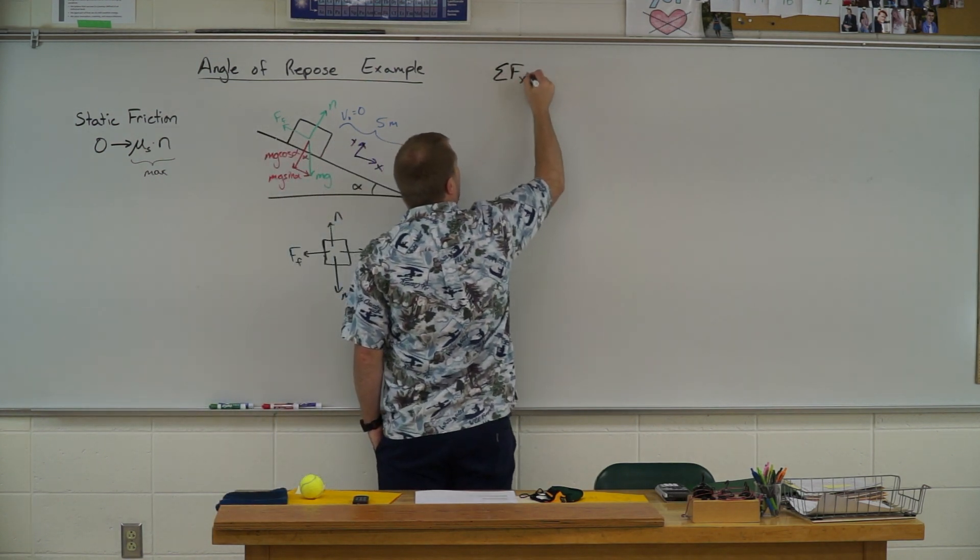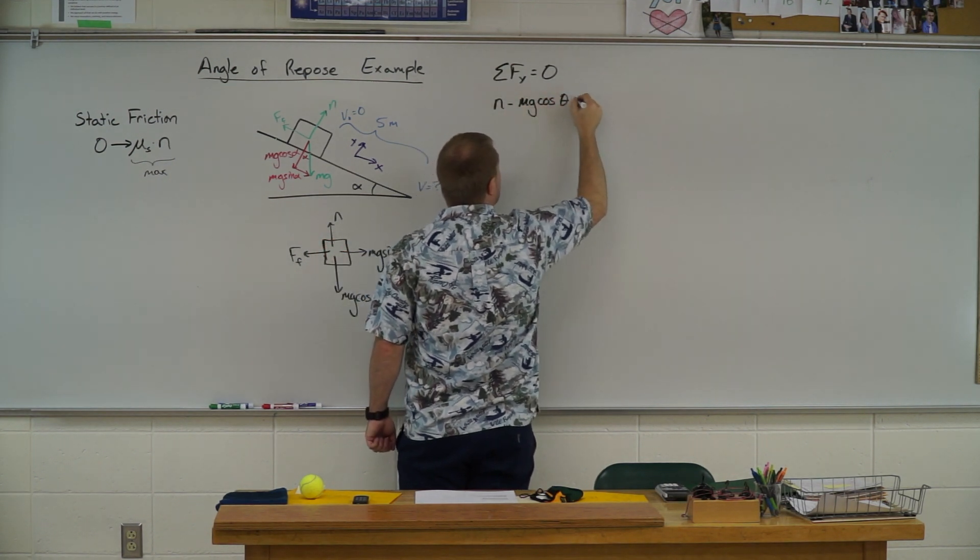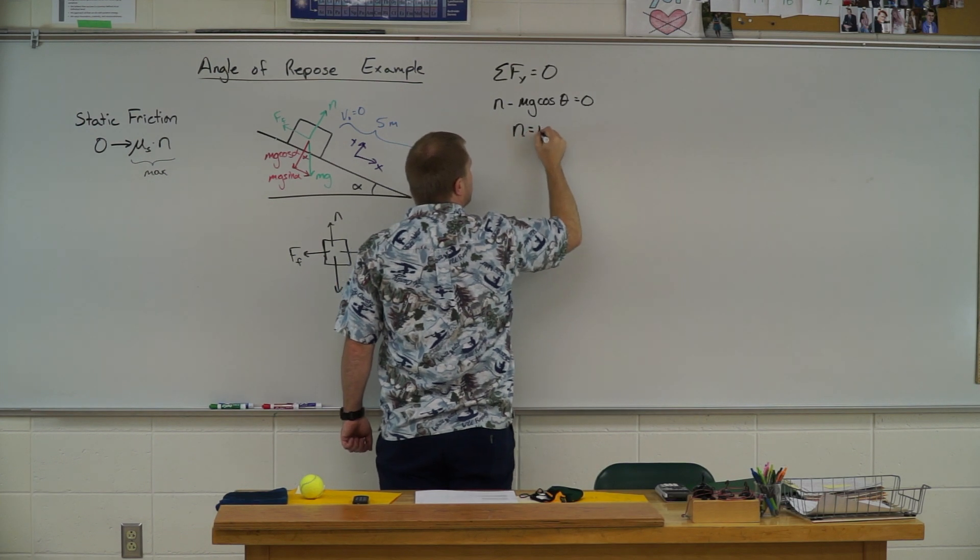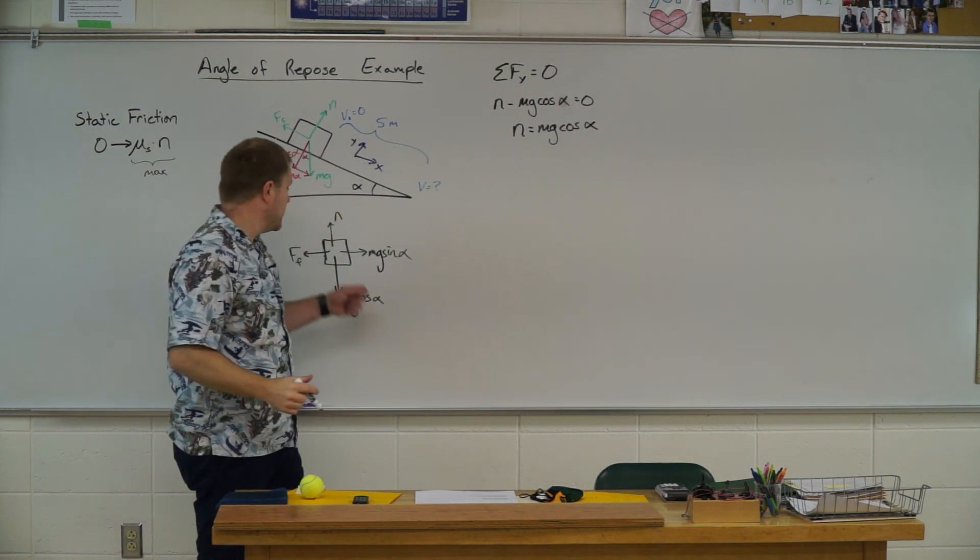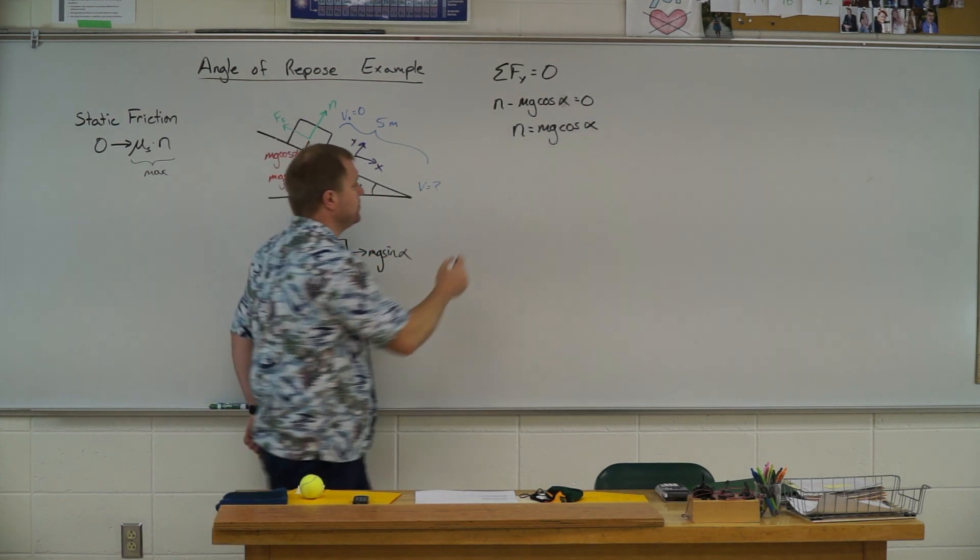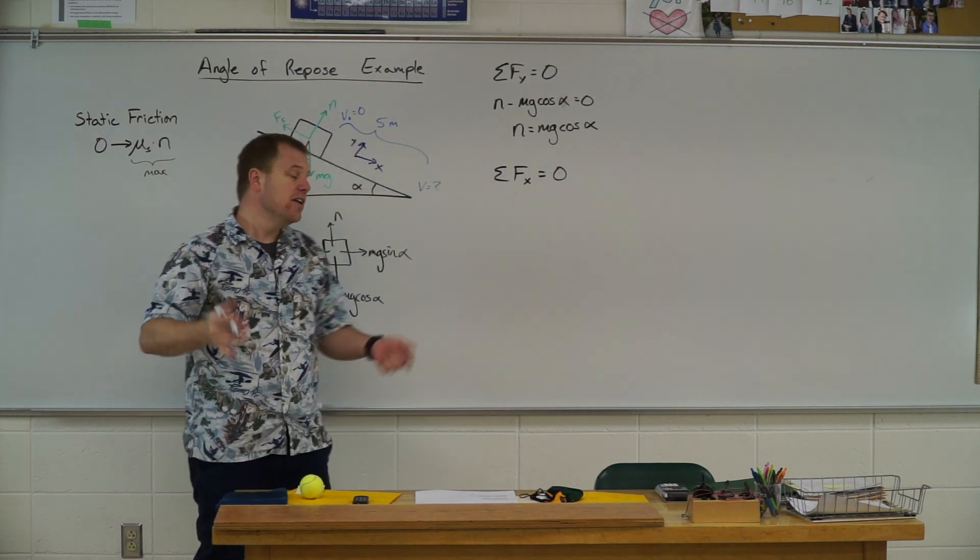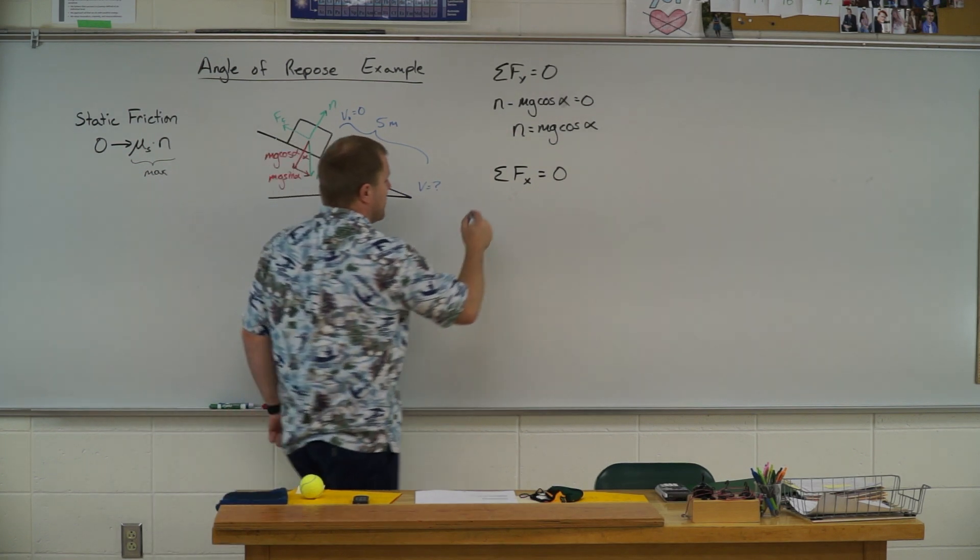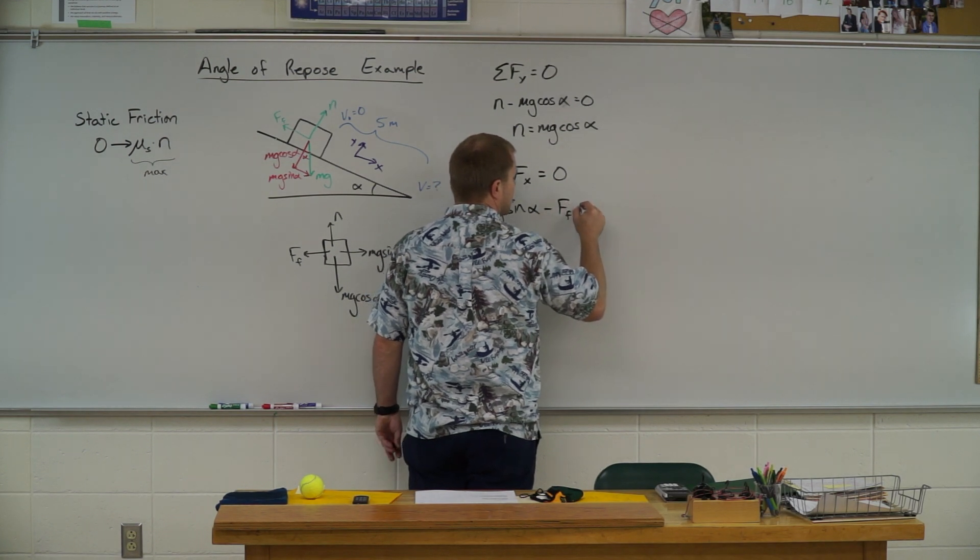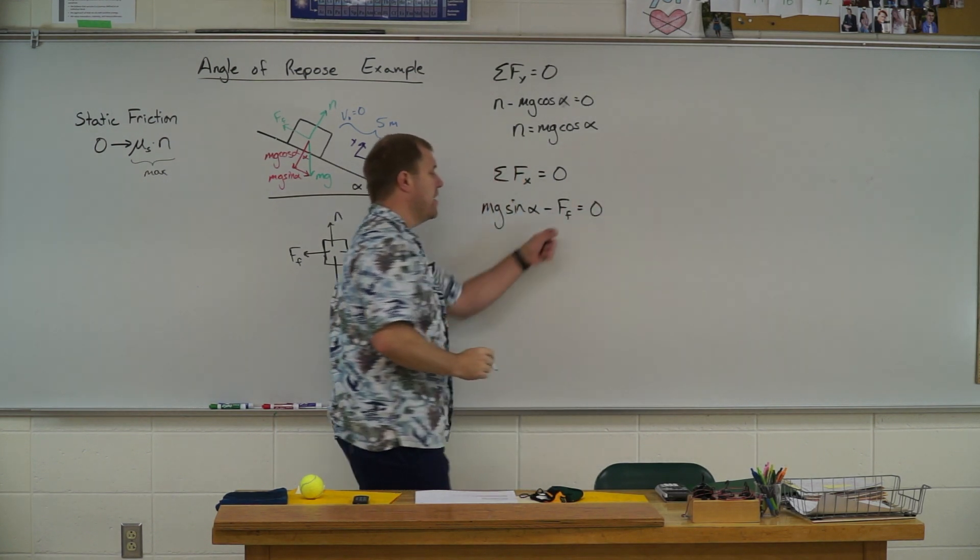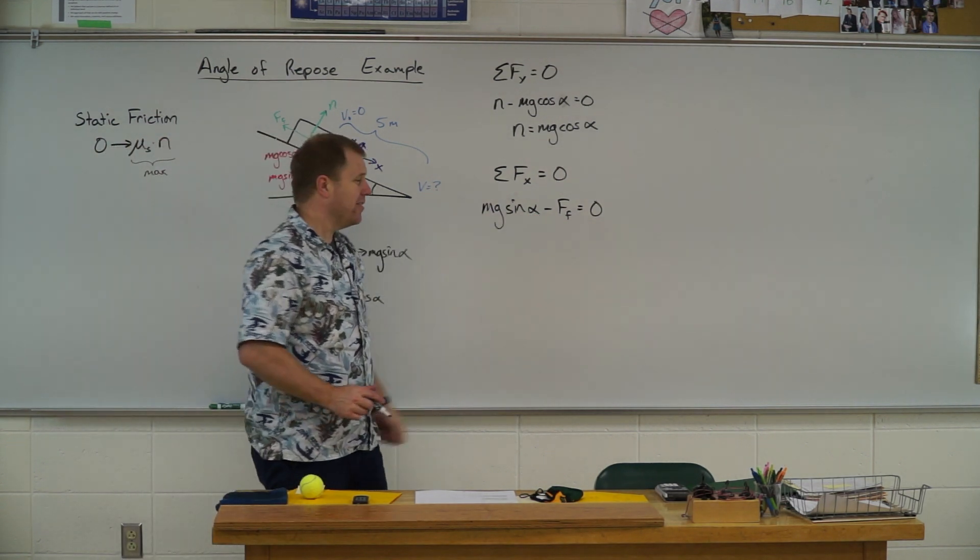So summing up the forces in the y direction, I get zero. So I have normal force minus mg cosine of theta equals zero. So the normal force is equal to mg cosine of alpha not theta. Next, we're going to do the x direction. So I sum up the force in the x direction. Again, it's going to be zero because we are at that maximum angle. It hasn't started accelerating yet. So I have mg sine alpha minus the force of friction equals zero. And this force of friction we are talking about is the maximum because we want to know what is that maximum angle, that angle of repose.